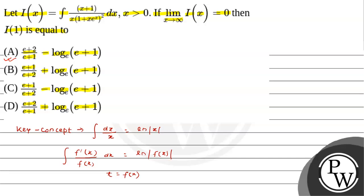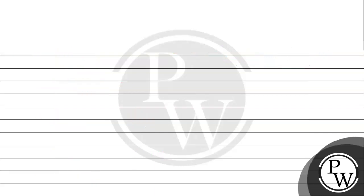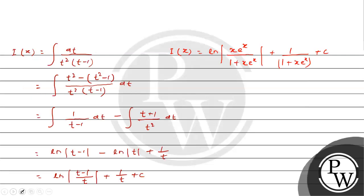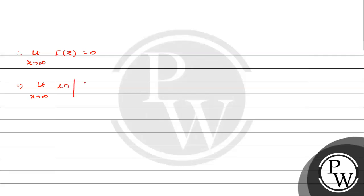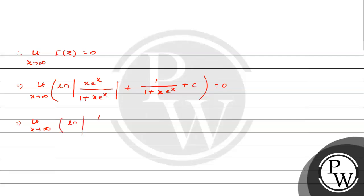Now it is given that the limit as x tends to infinity of I(x) equals 0. Therefore, taking the limit as x tends to infinity of ln|xe^x / (1 + x·e^x)| + 1/(1 + x·e^x) + c equals 0. For finding c, we find the value of this limit by dividing numerator and denominator by x·e^x.